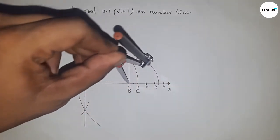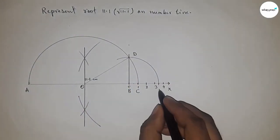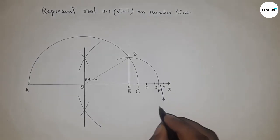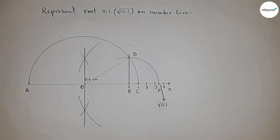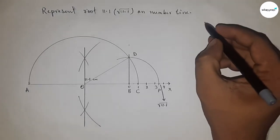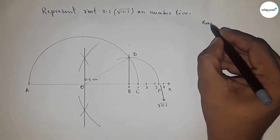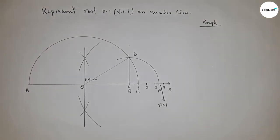Next, take the distance BD by compass and draw an arc which meets the number line at point P. This is the representation of root 11.1 on the number line. Now let's roughly discuss the calculation.